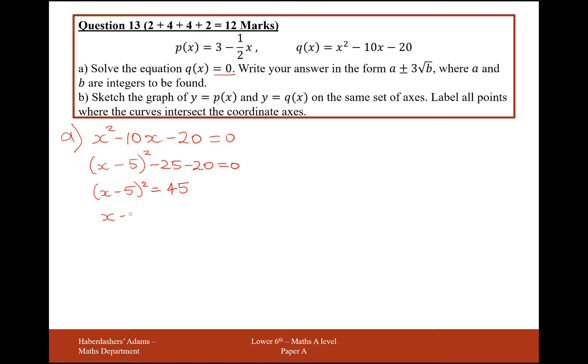Square root both sides, remembering you've got a positive and a negative, so positive, negative, root 45, and then add the 5 to both sides to be 5 plus or minus root 45. That doesn't look like what we want our answer in, we need a 3 at the front.